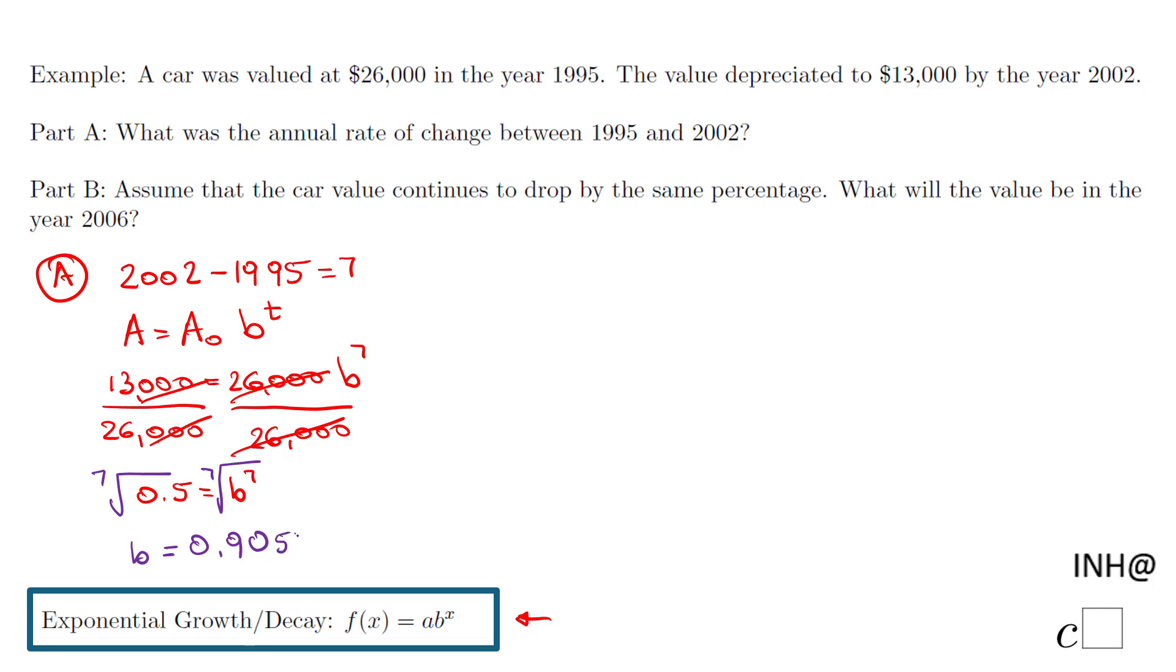I copy the first five decimals and this is the b we're gonna need. But we need the annual rate of change, and depending how you think about that one, we can say b is either 1 minus r or 1 plus r. Let's say we do 1 plus r. So we have here 0.90572 equals 1 plus r.